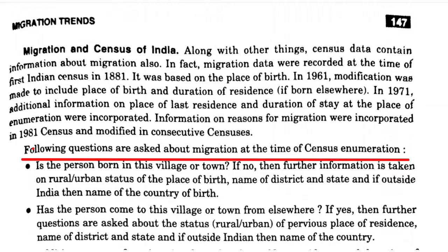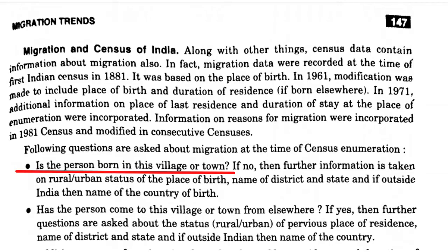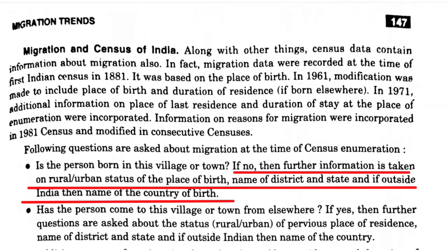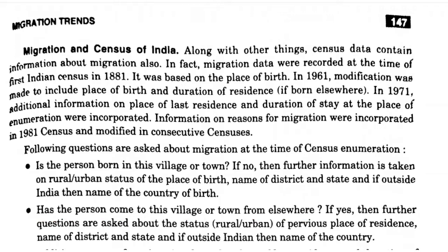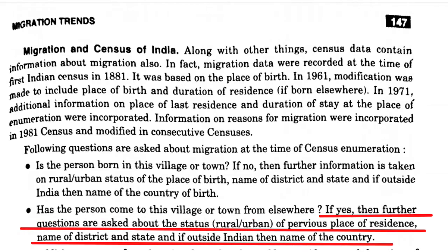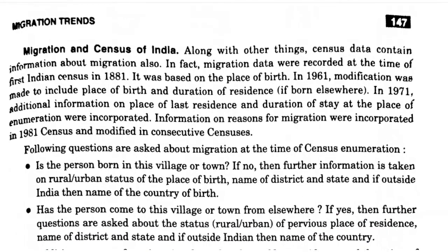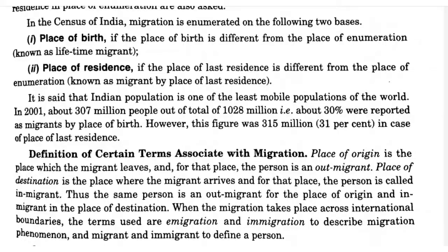Two main important questions are asked during census enumeration. The first question is: is the person born in this village or town? If yes, counting is done on the place of birth. If no, further information is taken — whether the place of birth was rural or urban, the name of the district and state, or if outside India, the name of the country. The second question is: has the person come to this village or town from elsewhere? If yes, further questions are asked about the last place of residence — whether it was rural or urban, the name of the district or state, or if outside India, the name of the country.